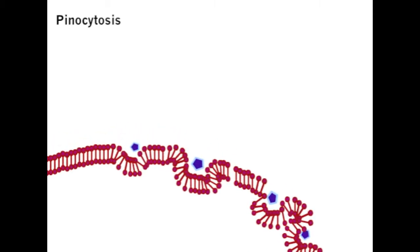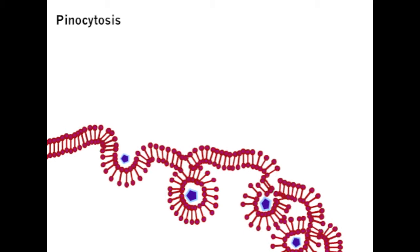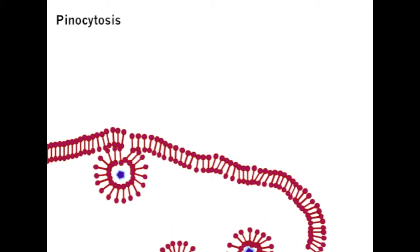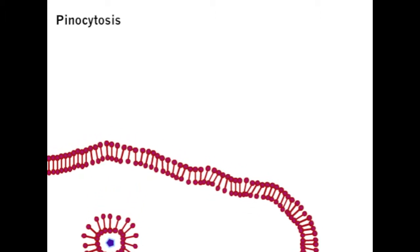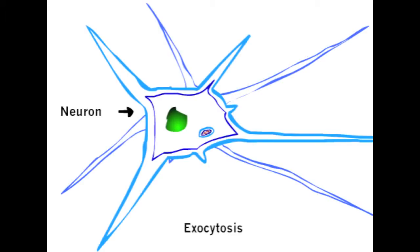This is a macrophage, a type of blood cell found in most tissues. It ingests 25% of its body fluid each hour. In both pinocytosis and phagocytosis, it is the phospholipid bilayer that bends. Both the cell membrane and the vesicle are made of the phospholipid bilayer.